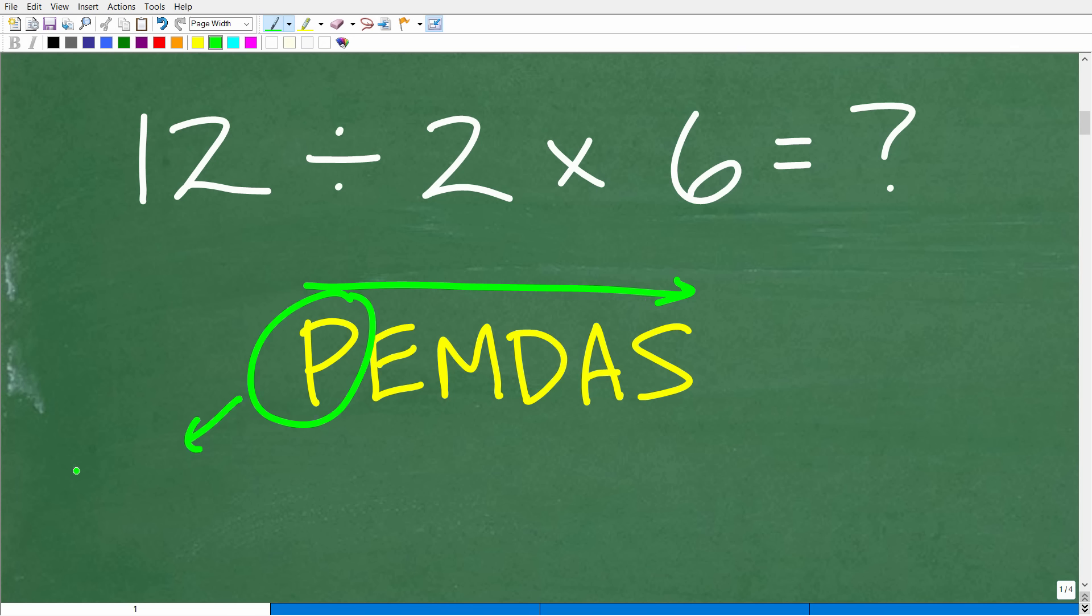P stands for parentheses. So if we have parentheses in a math problem, let's suppose I have parentheses right here. You would start by doing all the math inside of those parentheses. This problem does not have parentheses. So this step we pretty much kind of skip. But this is what this P stands for. It's parentheses.